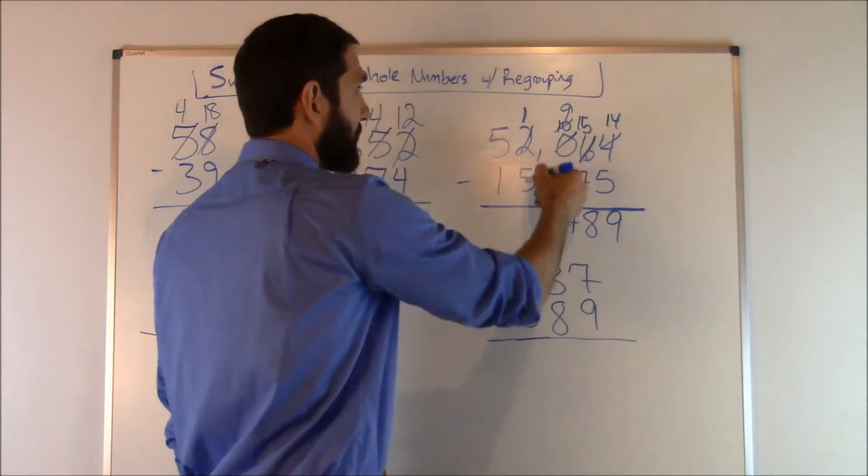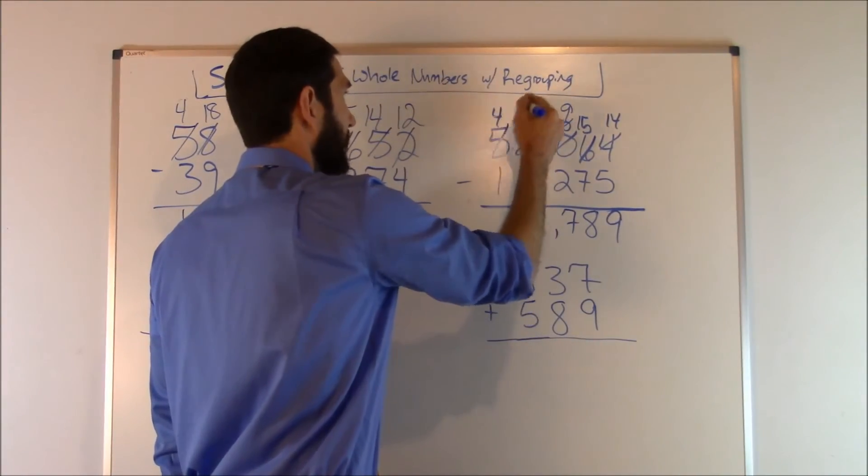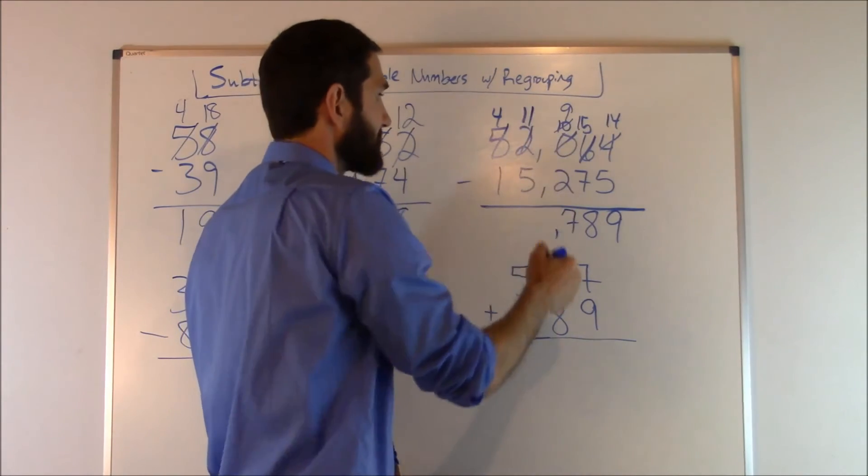Now we go here: one minus five. Again we can't do that. We got to bum one. So this becomes a four and this becomes an eleven. So ten plus one is eleven. So eleven minus five is going to be six.